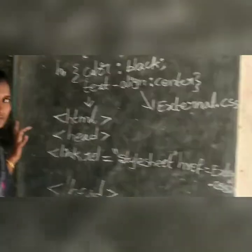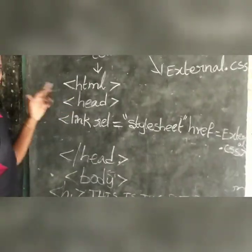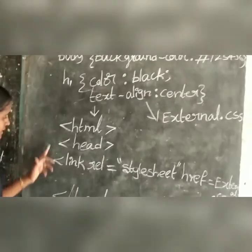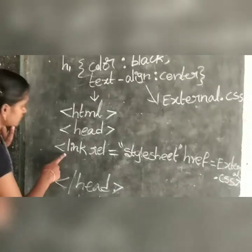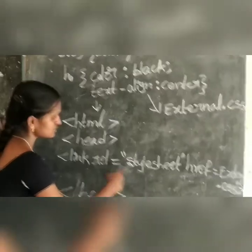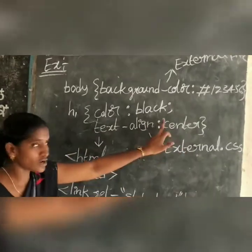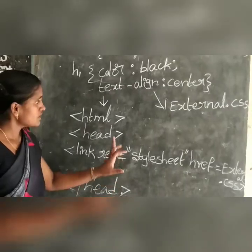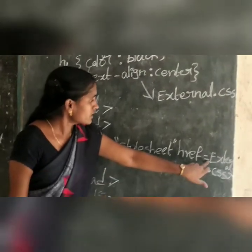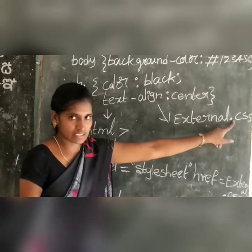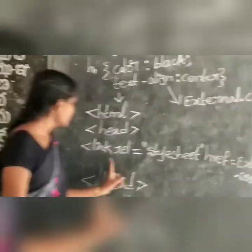Next, in another web page, we write the HTML program. We give the HTML tag, the head tag, and then a link tag. In that link tag, we write: link relation equal to stylesheet. The href reference points to the external .css file. Since the storage file was saved as external.css, we give that name in the href attribute.